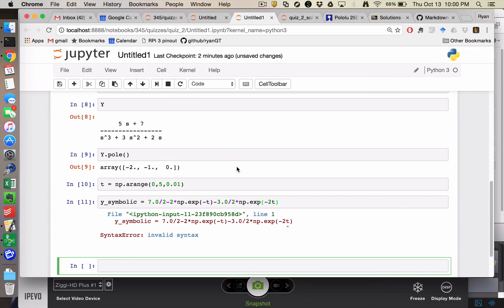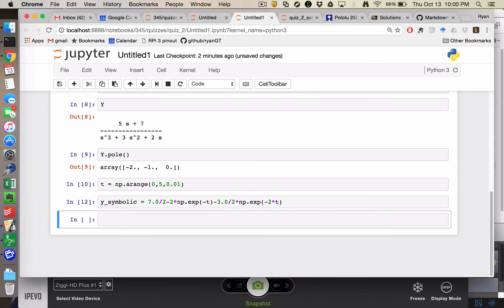I have an invalid syntax. What are you doing to me? Oh. Forgot my asterisk. Okay. And the question is, is that the same as taking the numeric answer from control dot impulse response of y comma t.